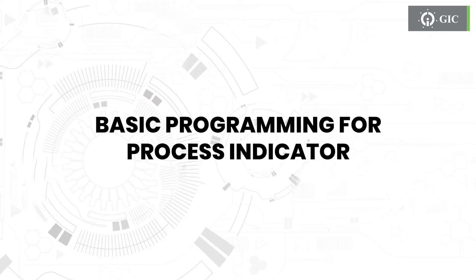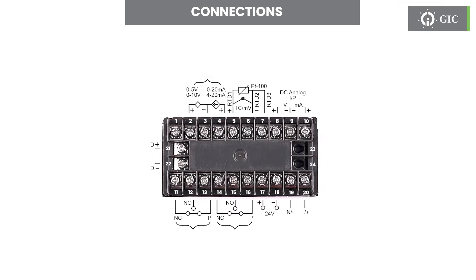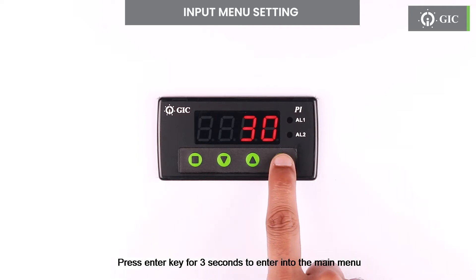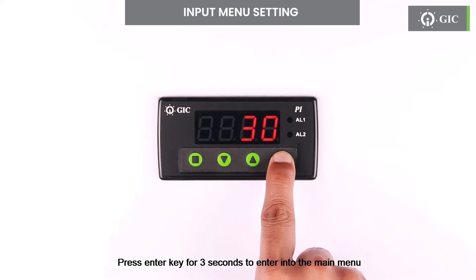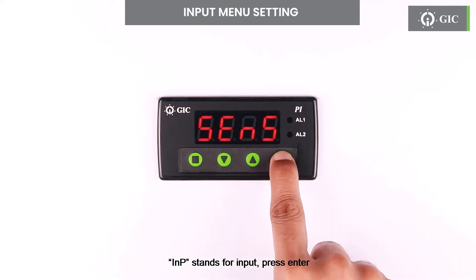Let us see the basic programming for the process indicator. Start and power on the process indicator from default factory settings, after all necessary connections for sensor and power supply are connected. First step is to select input. Press the enter key for 3 seconds to enter into the main menu. INP stands for input — press enter.